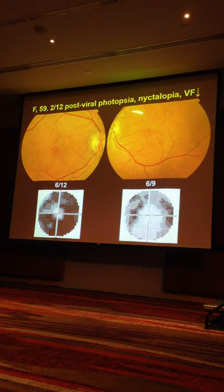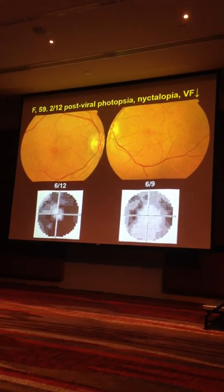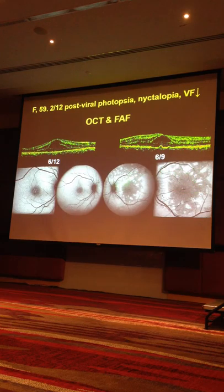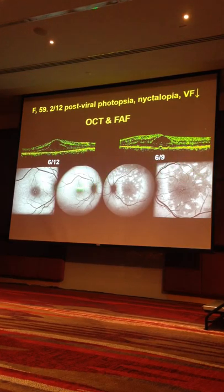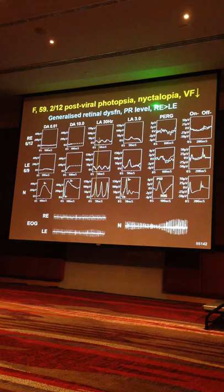Here is a 59-year-old patient with post-viral photopsias and acquired night blindness, a little fluid in the posterior pole, and very constricted fields. Her history was otherwise unremarkable. When we looked at the autofluorescence, we got a shock because we'd never seen autofluorescence like this. We assumed — as it turned out wrongly — that the dark areas were bad. And there is cystoid macular edema with a lovely petaloid appearance. When we looked at the electrophysiology, there was massive generalized retinal dysfunction at the level of the photoreceptor. The EOG, which reflects the interaction between RPE and photoreceptors, is down — suggesting a possible diffuse RPE phenomenon.